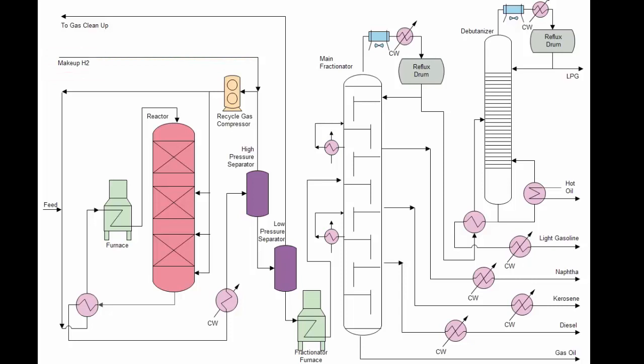The process begins when feed material is combined with hydrogen and heated in a furnace before entering the reactor system. The reactor vessel, and sometimes vessels, contain multiple reaction sections filled with catalysts. Often the first bed in the reactor is a hydrotreating bed that removes nitrogen-based materials that would otherwise poison the hydro-cracking catalyst.